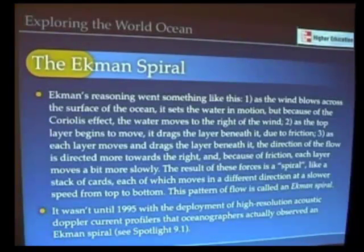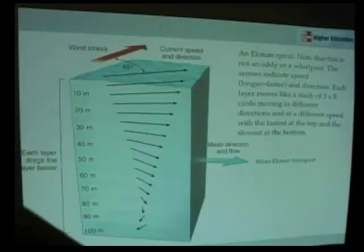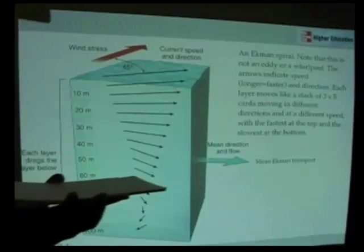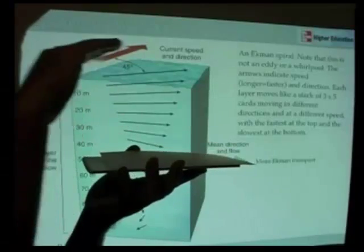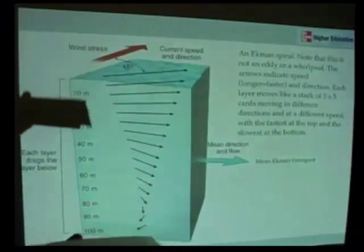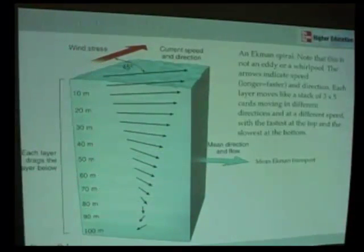Let's explore what the Ekman spiral looks like. If we consider the ocean as a series of layers, different layers from surface to bottom, what we find is that as the wind blows across, because of the Coriolis effect, remember in the Coriolis effect, northern hemisphere right, the water on the surface moves off at an angle to the wind.